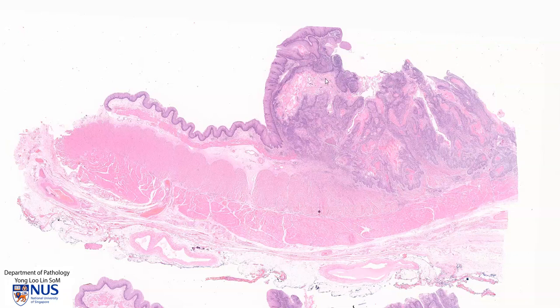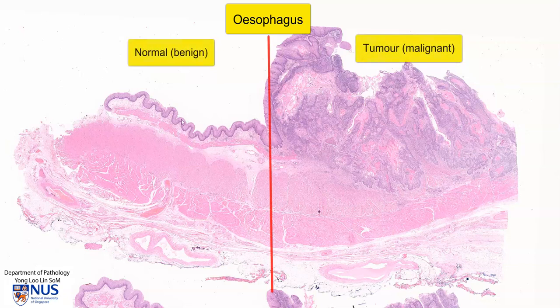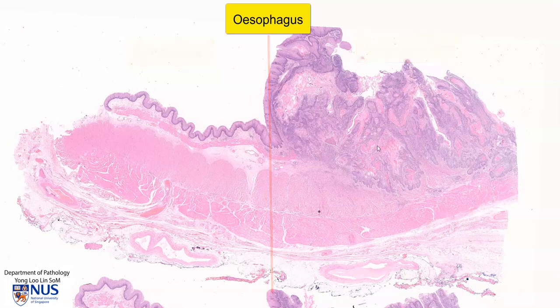Hello. This is a microscopic slide of the esophagus. On the left side is the normal esophagus, and over here is a large mass — this is a malignant tumor.